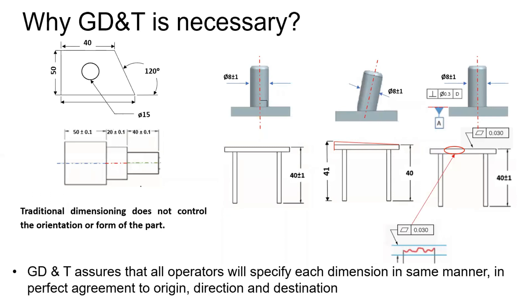Why is GD&T necessary? In traditional dimensioning, we sometimes don't specify tolerances at all — there is no upper or lower limit given for a dimension. In the first image, there are no tolerances specified. In the second image of a stepped shaft, tolerances are given but there is no control on the axis of the shaft, meaning step one and step two need not be coaxial — their axes can be offset by a distance and the part is still acceptable.